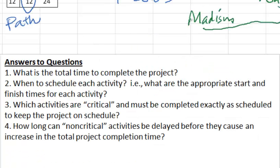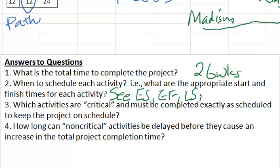Now we could answer all the questions here. What is the total time to complete the project? The total time to complete the project we figured it out as 26 weeks. Now when to schedule each activity, that is, what are the start and finish times for each activity? We have them all here in the boxes. We got ES, EF, LS, and LF that we already have in our nodes.